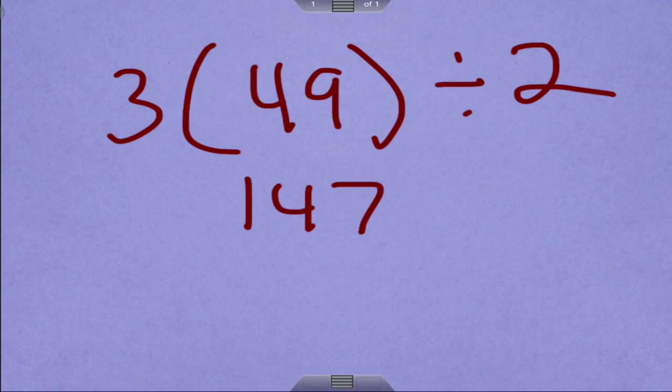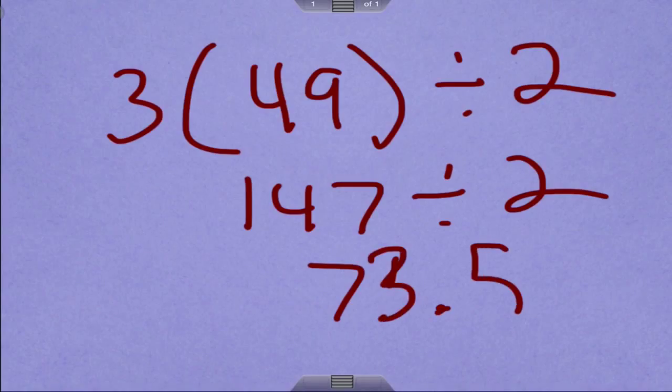So 147 divided by 2 is what's next. So 147 divided by 2 is 73.5. I did that real quick in my head. Okay.